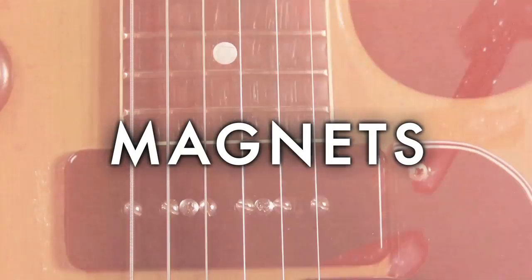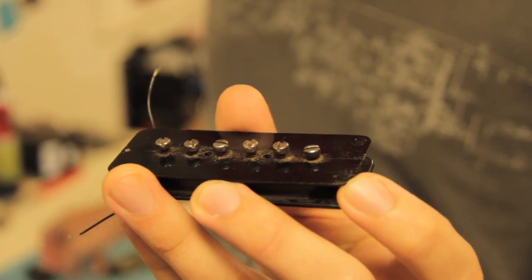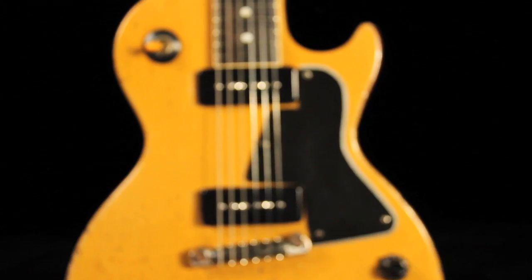There's two different types of magnets that they use in the guitar world. There's Alnico, which is an alloy of aluminum, cobalt, and nickel combined. The next one is ceramic, which is a little more brittle, it's a little harder.